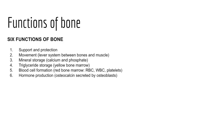Bone also serves as a storage sink for triglycerides, stored in the adipose cells of yellow marrow cavities of long bones. Fifth, bone serves as the site of blood cell formation — hematopoiesis — occurring in the red bone marrow of flat bones and the ends of long bones, producing red blood cells (erythrocytes), white blood cells (leukocytes), and platelets. Lastly, osteoblasts in bone produce the hormone osteocalcin, which helps regulate glucose in the body.